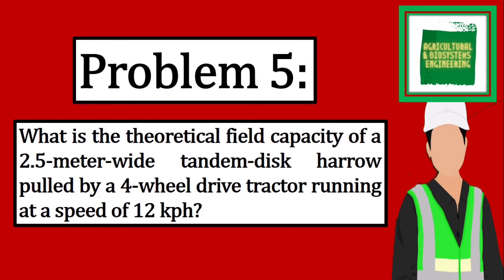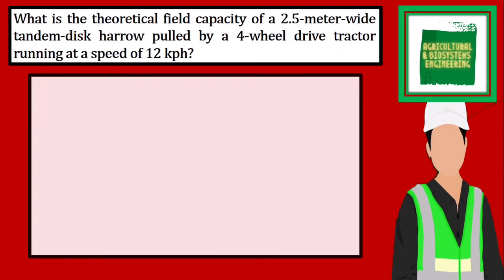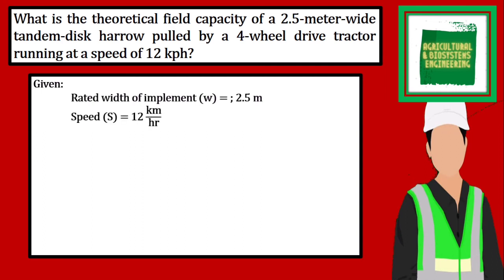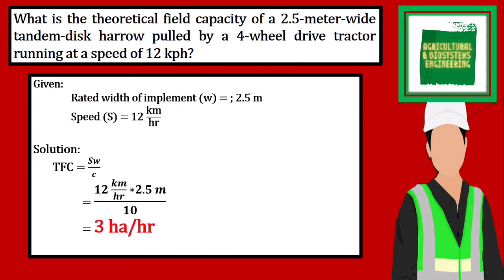Next, we proceed with our last problem. What is the theoretical field capacity of a 2.5-meter wide tandem disk harrow pulled by a 4-wheel drive tractor running at a speed of 12 kilometers per hour? The given in the problem are the rated width of implement of 2.5 meters and the speed of 12 kilometers per hour. The theoretical field capacity is equal to the speed of 12 kilometers per hour multiplied by the width of 2.5 meters, all over the constant of 10. We simply solve, giving us a final value for problem 5 of 3 hectares per hour.